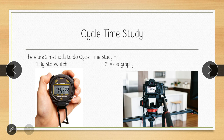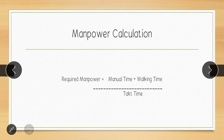After understanding these concepts, we need to know cycle time study, because without this study we cannot calculate manpower. Cycle time study can be done by two methods: first is the stopwatch method, and the second is videography. Either you record the time manually using a stopwatch for each operation, or you make a video and review it afterwards.